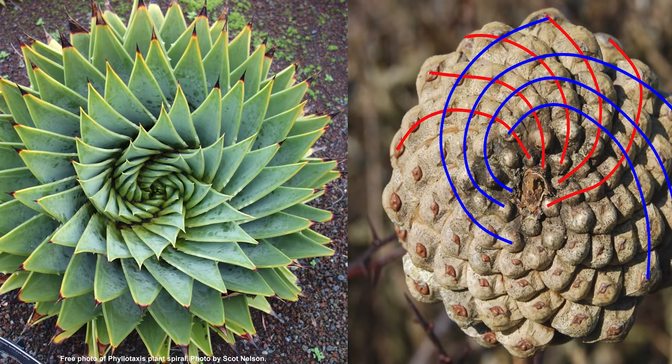Dear colleagues, as we know, the phenomenon of spiral phyllotaxis is the only irrefutable example of the presence of the Fibonacci numbers in nature.